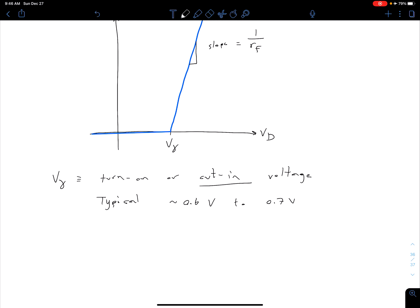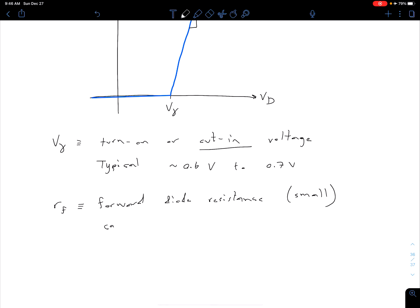This R F is called our forward diode resistance. So R sub F is our forward diode resistance. And so typically this is going to be a really small value. So think on the order of tens of ohms. And actually what we're going to do is we're going to assume that it's 0 unless we're told otherwise.